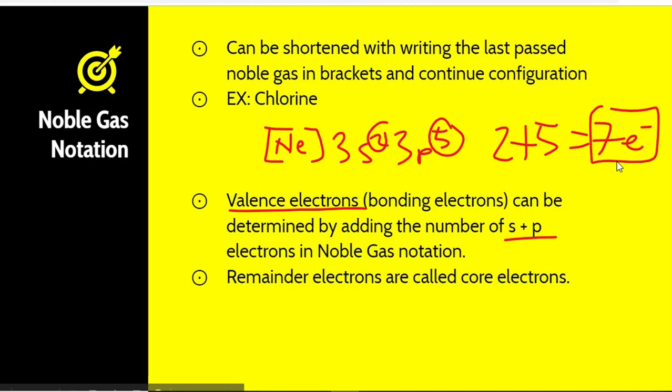You can also determine valence electrons based on the group of the periodic table. Group 1 has 1, group 2 has 2 — skip your transition metals — then 3, 4, 5, 6, 7, 8. Those core electrons that are not part of the S and P on the outside are known as core electrons because they're closer to the nucleus, closer to the core.